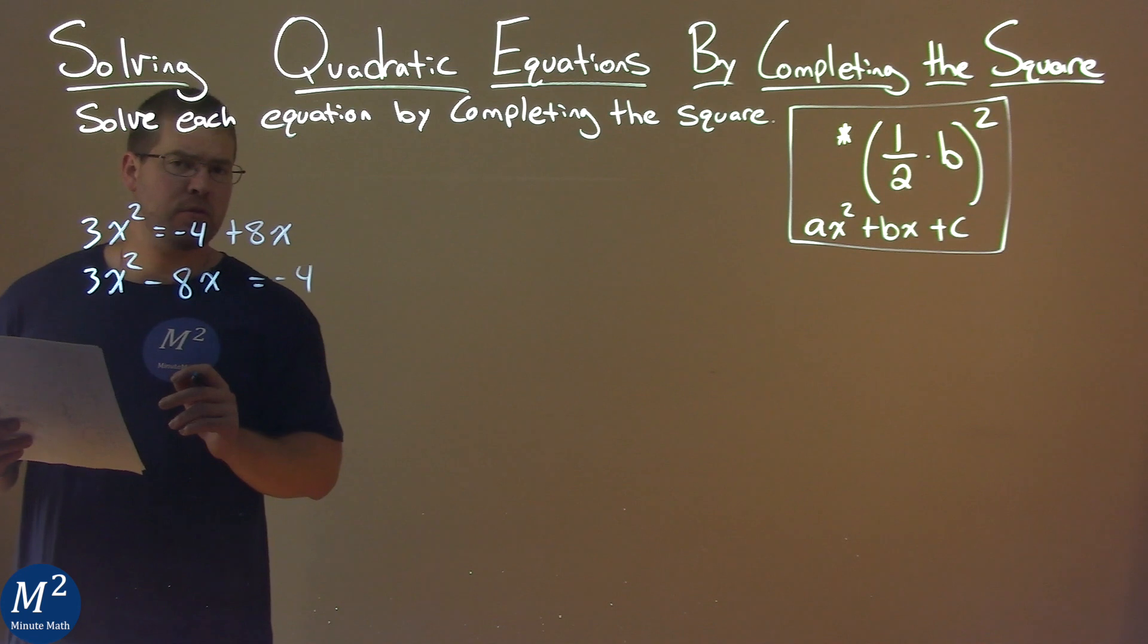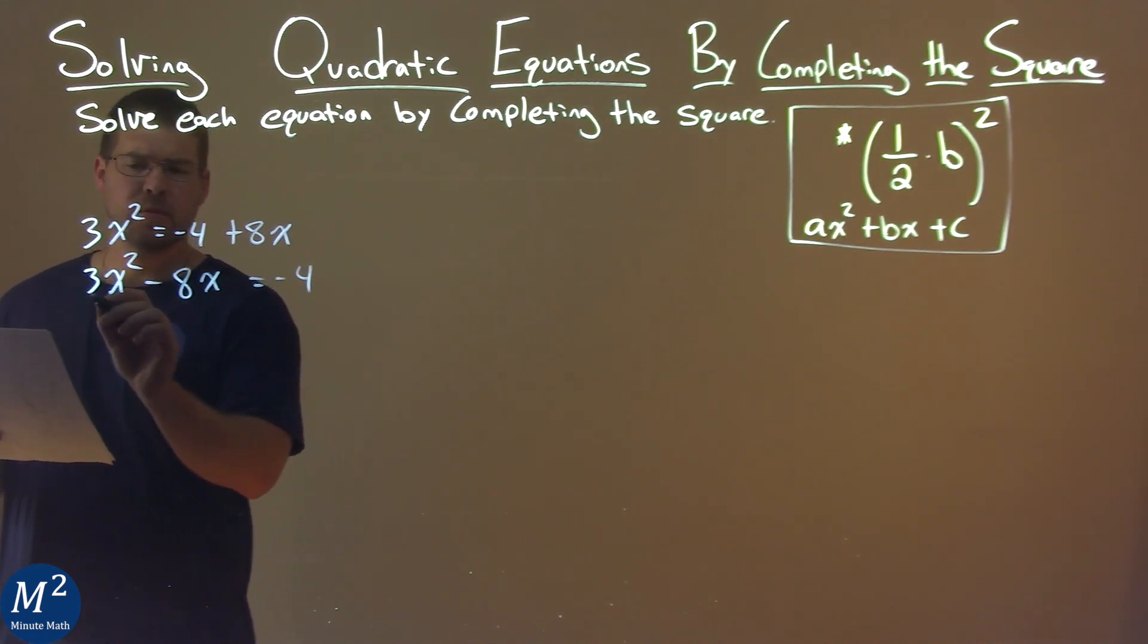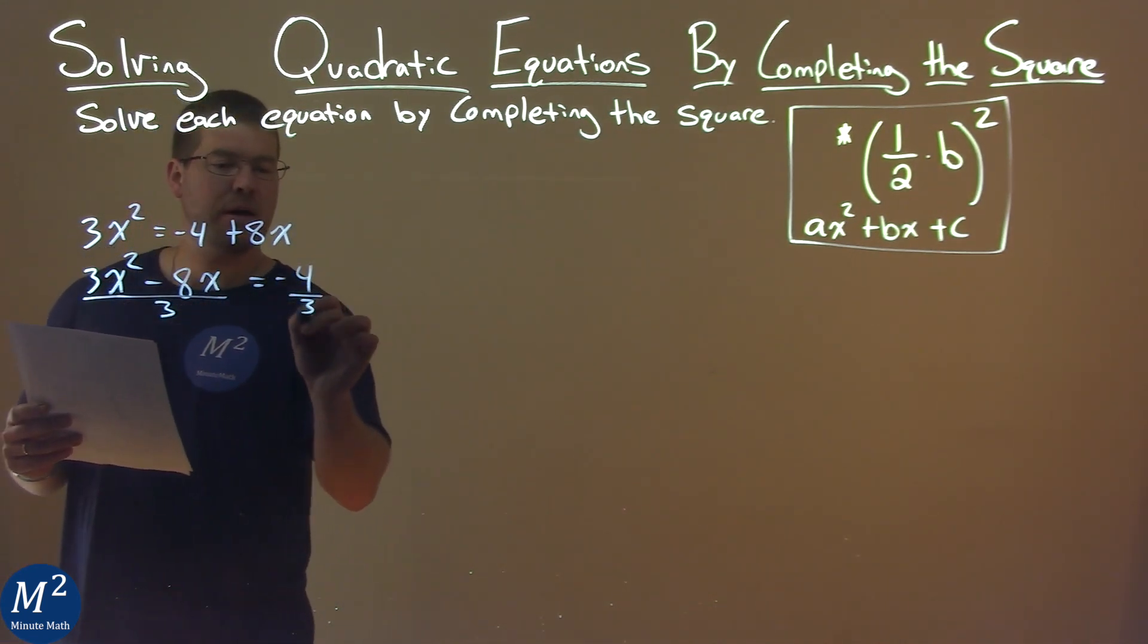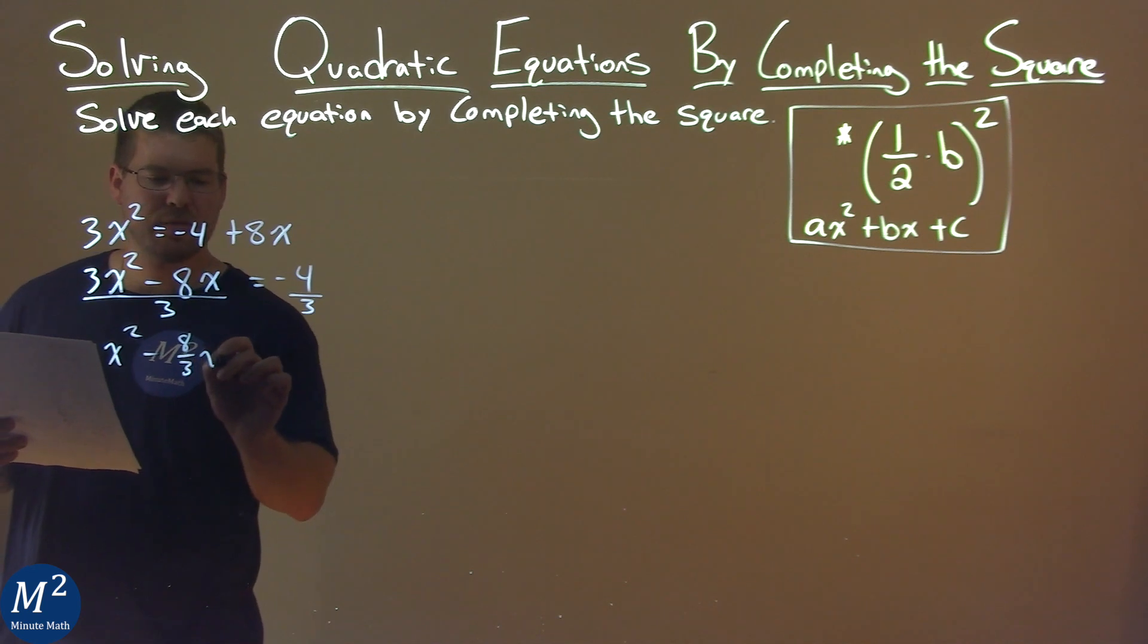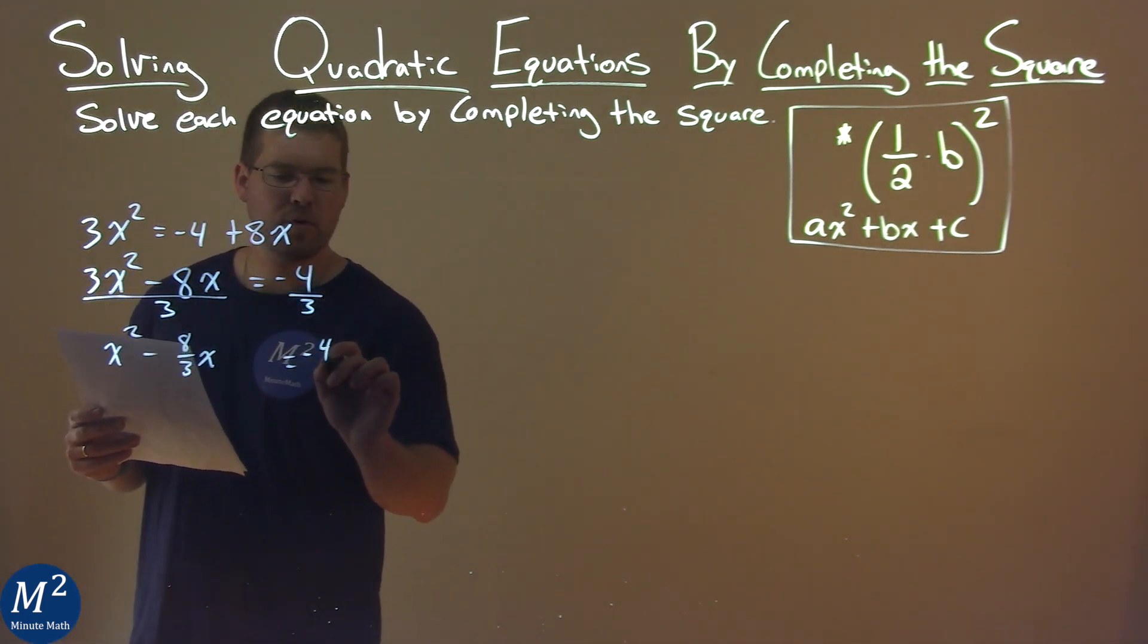Now my a value is 3, and we want that to be 1. So I'm going to divide both sides of the equation by 3. The left-hand side is just x² - 8/3x. I'm going to leave a space here, equals -4/3.